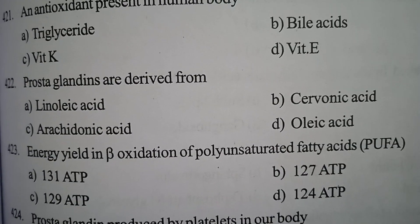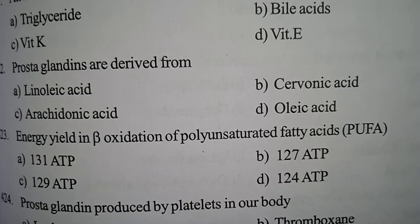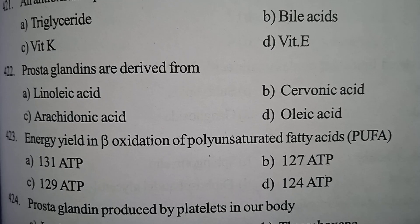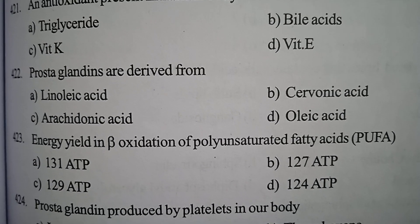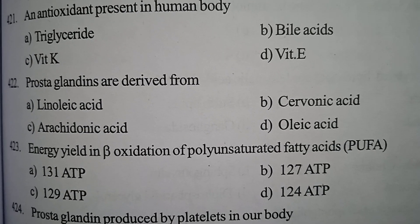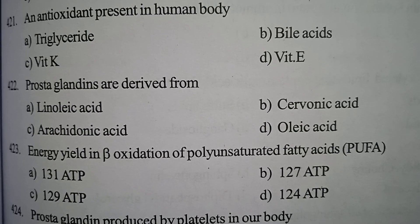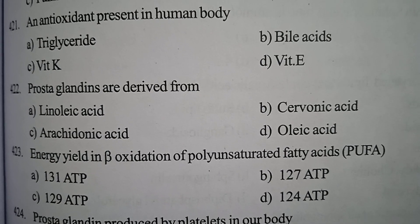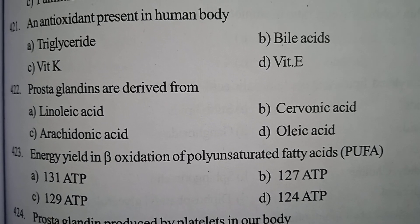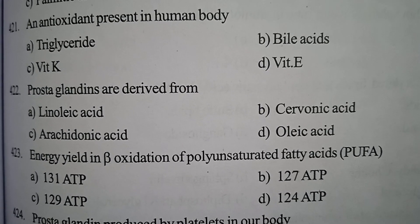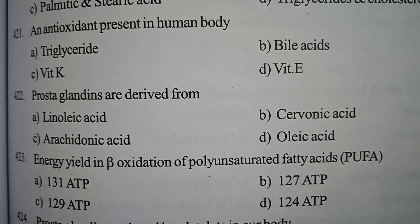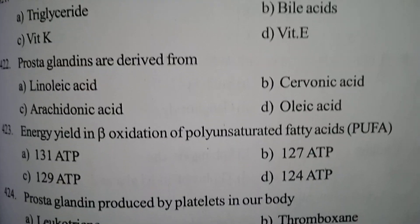Next one: energy yield in beta oxidation of polyunsaturated fatty acid (PUFA) — option A 131 ATP, option B 127 ATP, option C 129 ATP, option D 124 ATP. Correct answer: option B, 127 ATP.